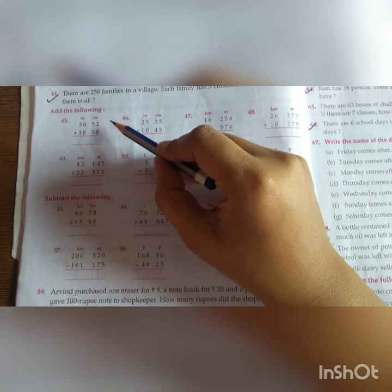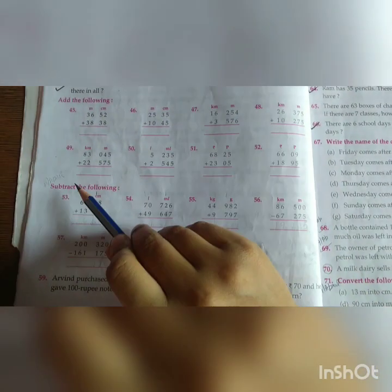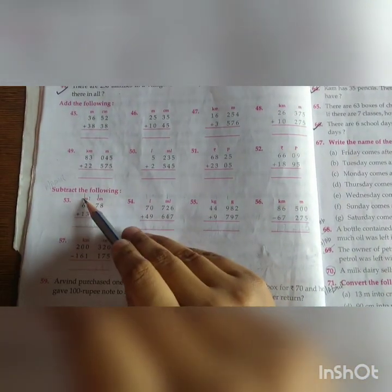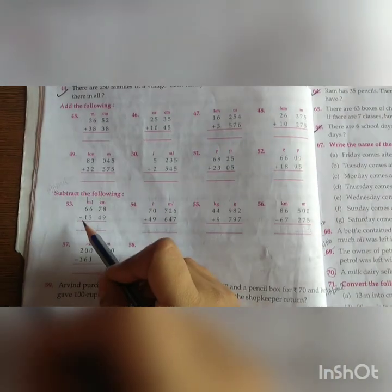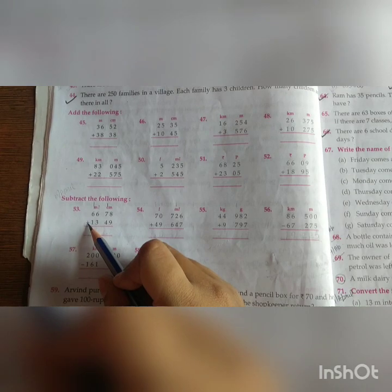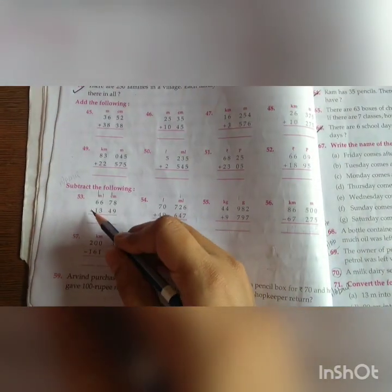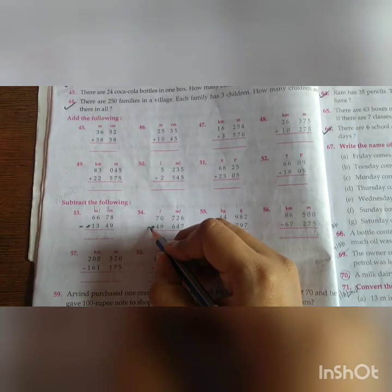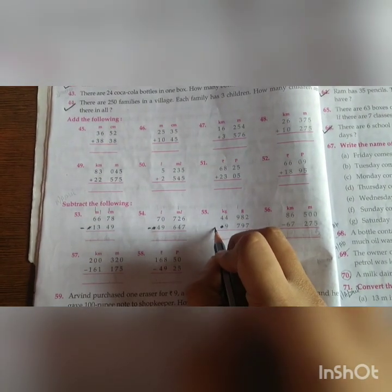Question number 45 to 52 you have to add the following and 53 to 58 you have to subtract the following. But in 3 questions the plus sign is given. This is the sign of addition, plus sign. You will cut this sign and make it minus because we have to subtract the following. We have to do minus, so we will make a minus sign.